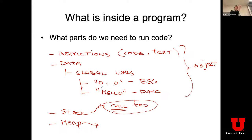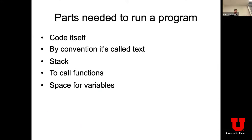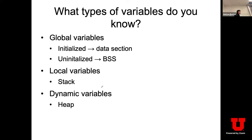A goto statement compiles into an unconditional jump — it's just a jump instruction. You can also do conditional jumps similarly. As a refresher, in C and most typical languages you have these kinds of variables — global, local, and dynamic. Does anyone know a language with some other kind of variable?